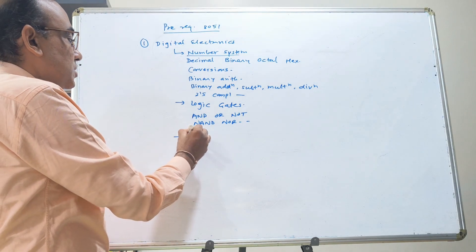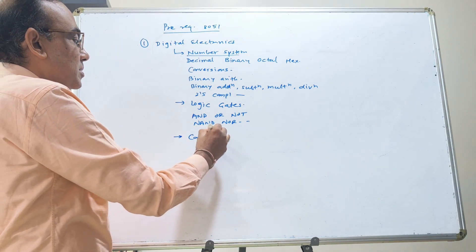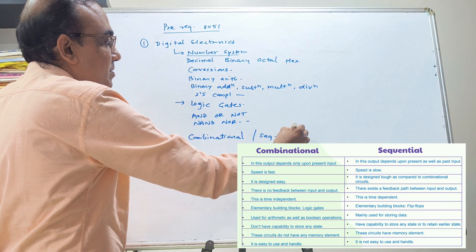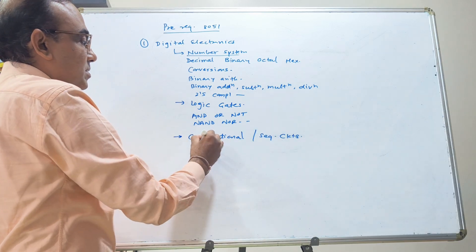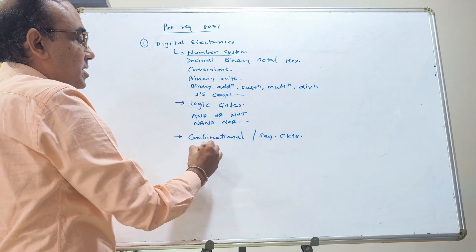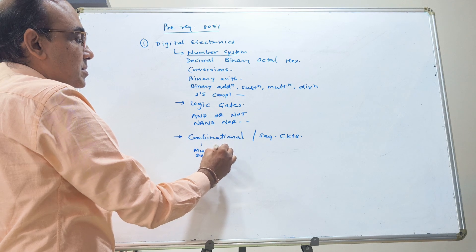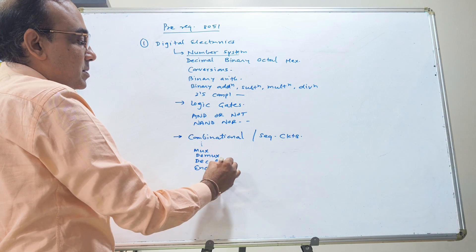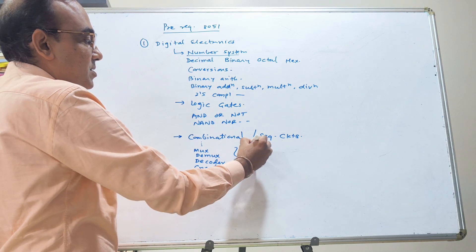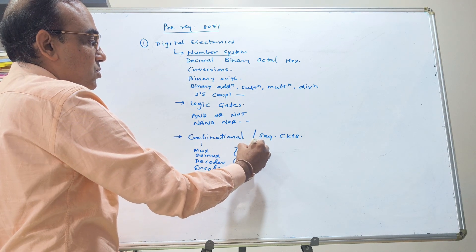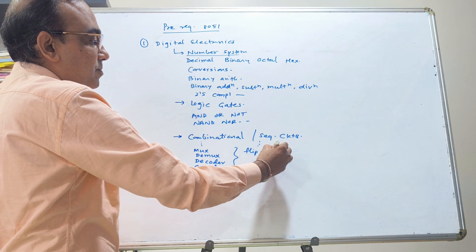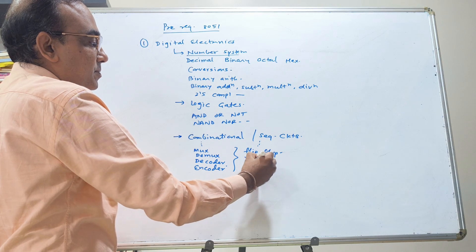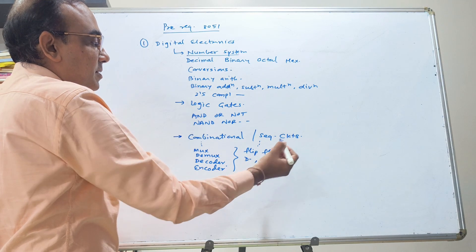Then you should know combinational and sequential circuits. You should start from flip-flop, D-type flip-flop, JK flip-flop and all that.